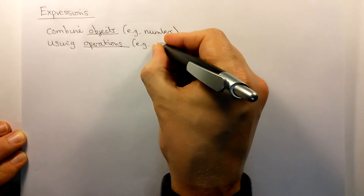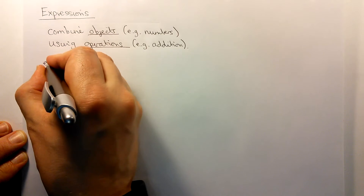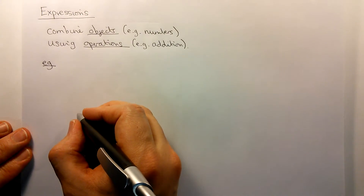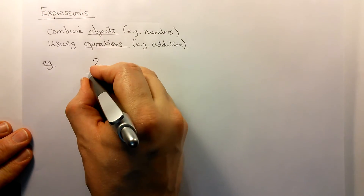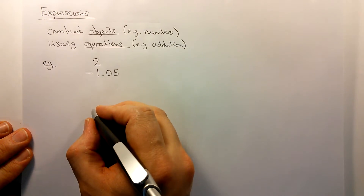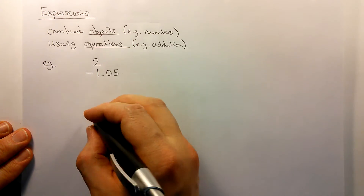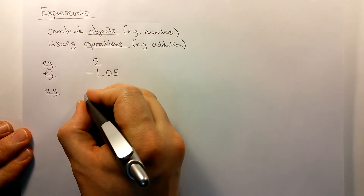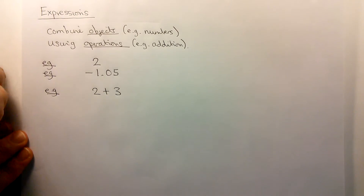An example of an operation would be addition. The simplest kind of expressions just have one object in them, so one example might be the number 2, another example might be the number minus 1.05, and so on. There are other kinds of simple objects that we could use to make expressions. More complicated expressions involve operations as well, for example the expression 2 plus 3.